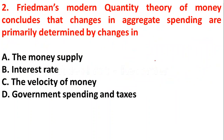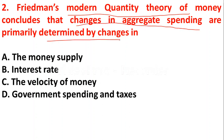The next question: Friedman's modern quantity theory of money concludes that changes in aggregate spending are primarily determined by changes in — Option A: the money supply; Option B: interest rate; Option C: the velocity of money; Option D: government spending and taxes. According to Friedman's modern quantity theory of money, changes in aggregate spending are primarily determined by changes in the money supply. So option A is the right answer. Please remember this.